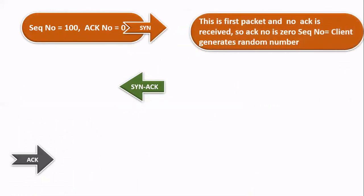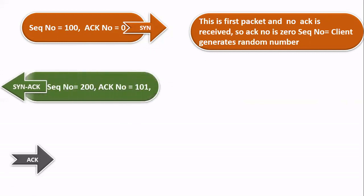Now let's see in detail about the sequence number — this is very important to understand. If you are in a Cisco TAC doing deep-level troubleshooting, you have to look at packets to see if there is any packet loss, check the sequence number, and figure out which packet is lost. In a three-way handshake, the sequence number is straightforward: the first SYN request goes with a sequence number — suppose it's 100, a random number — and the acknowledgement number is always zero because we haven't received any acknowledgement yet. Now the server will send the SYN-ACK.